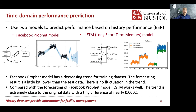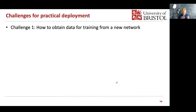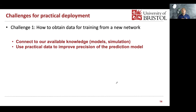These are the machine learning models we are employing in optical networks, but we do recognize that to deploy them, there are still a lot of challenges. One challenge is that we need a lot of data to train our model. When you have a new network without available data, how do you get a model and make it work? We hope to solve this by connecting to available knowledge — if we have models and simulation software, can we use that knowledge to support planning and use practical data to improve prediction precision?